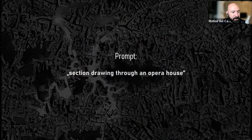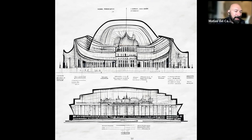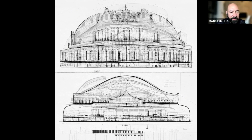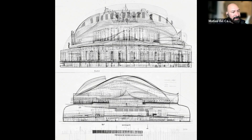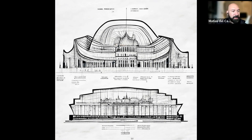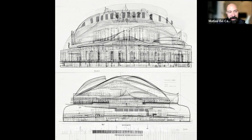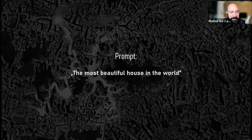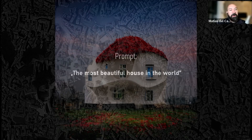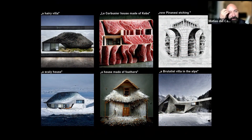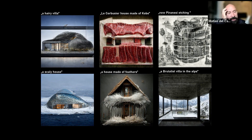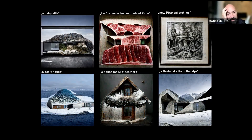For example, a prompt like 'section drawing through an opera house' produces images that look kind of like sections, but it's not an opera house — it's not going to work fully. But it might be useful as a starting point. I consider these machines not so much something that will replace human ingenuity, but something that expands and inspires it — and you can have a lot of fun with it. Just asking an AI 'what's the most beautiful house in the world' gives you results like that. You can really produce incredible amounts of imagery very fast using this new text-to-image neural network.